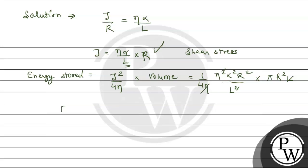So energy stored, E, equals pi R to the power 4 into eta alpha square upon 4L.